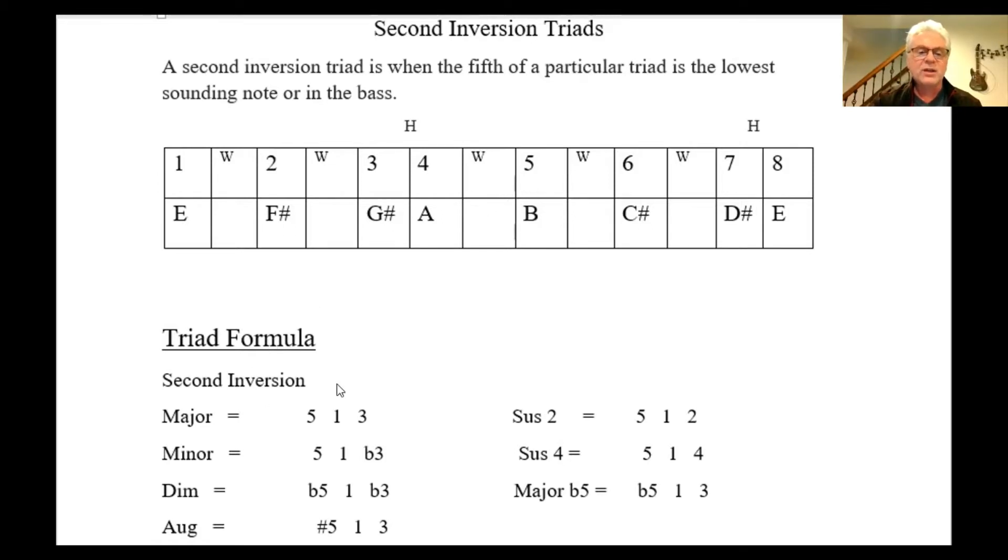The second inversion starts with the fifth of the chord. So in this case, our E major would start with B in the lowest sound in the bass, then we play our E, and then we play our G sharp, the third.